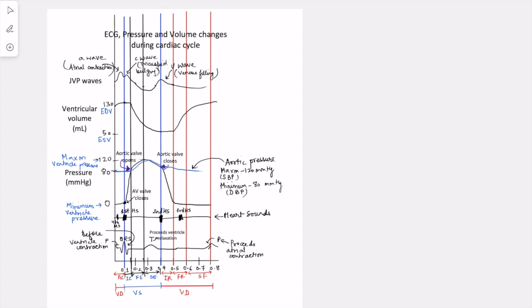With the help of this diagram, let's try to understand the cardiac cycle. The cardiac cycle is basically the sequence of electrical and mechanical events which happen in the heart in one beat.